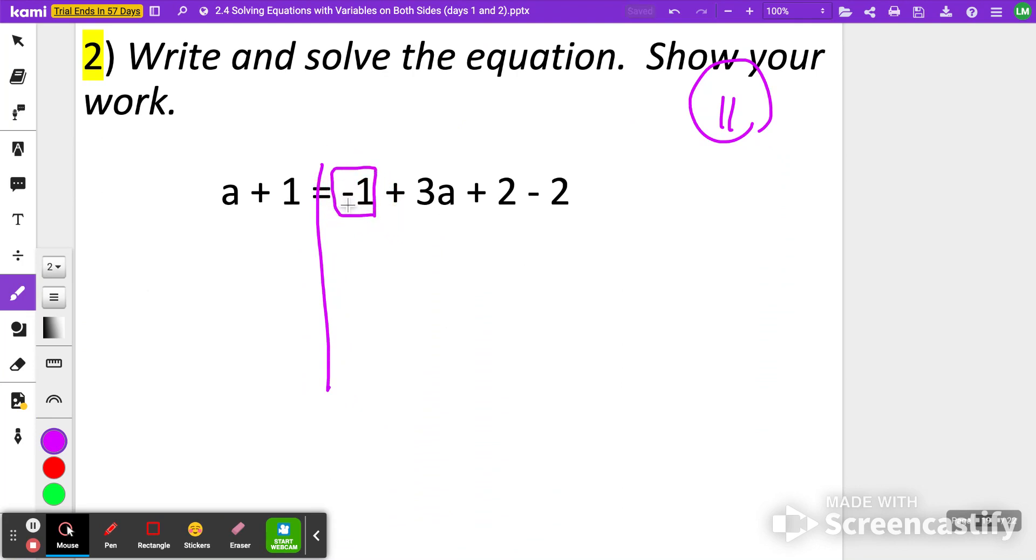I have a negative 1. Notice how I'm going to box it in with a negative in front of it. A plus 2, again, boxing that around, and a minus 2. Plus 2, minus 2 actually cancels out to be 0. So all that's left now is that negative 1 plus 3a on the right side, and then a plus 1 on the left side.